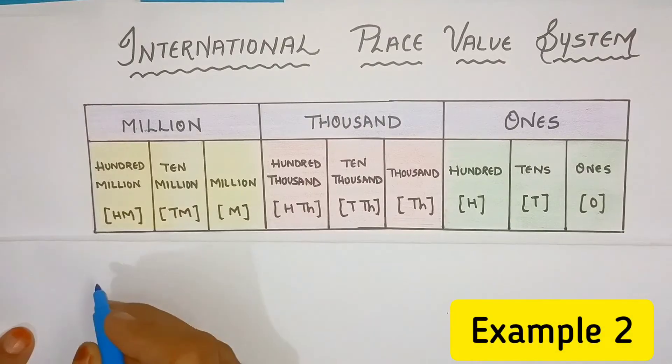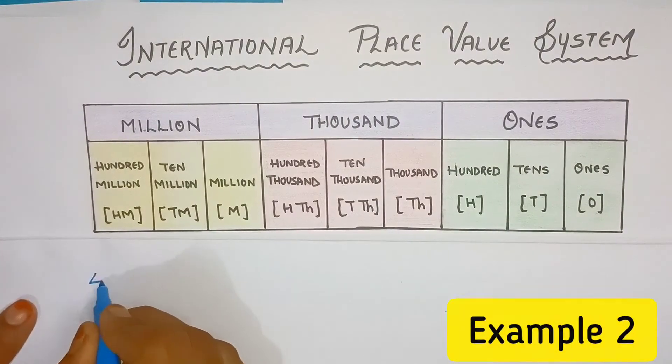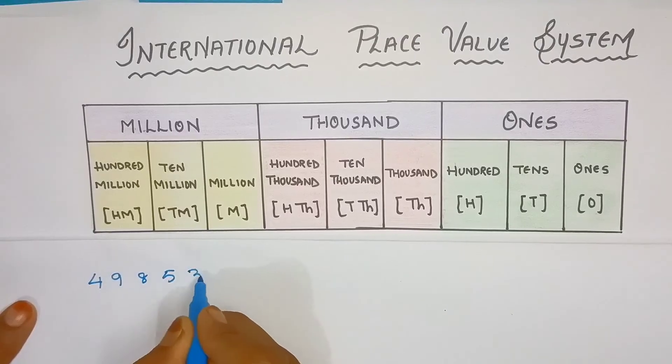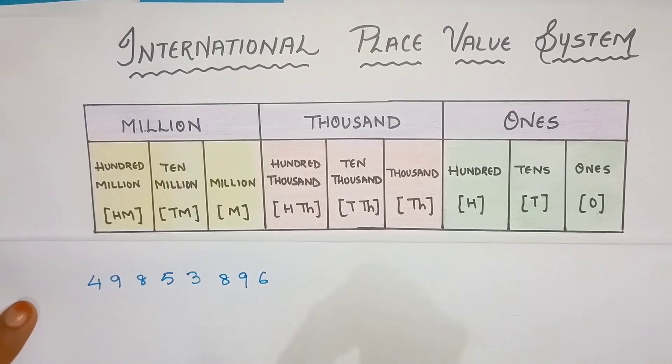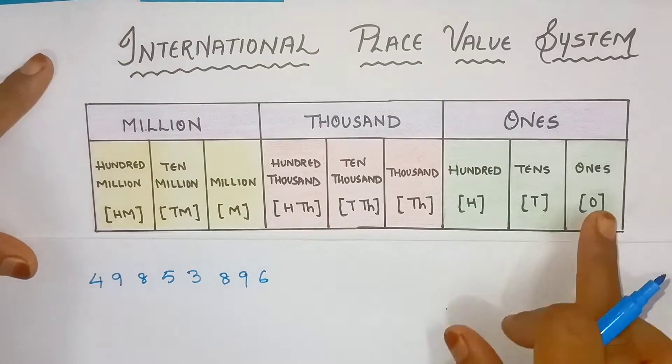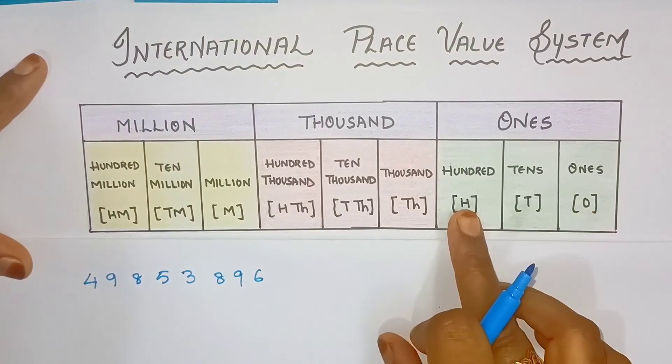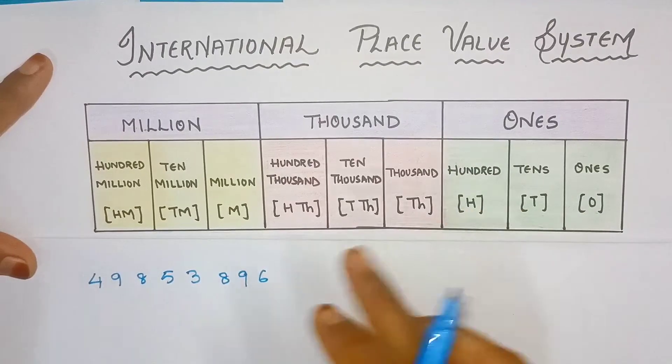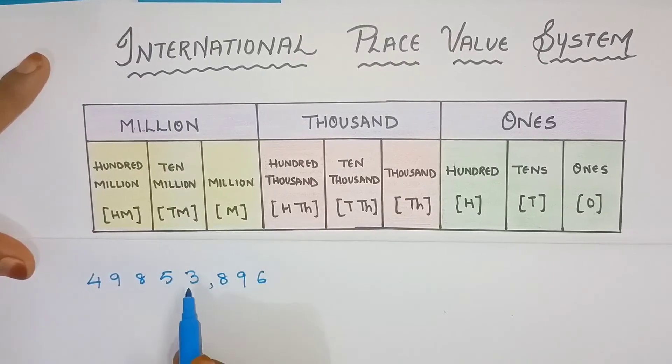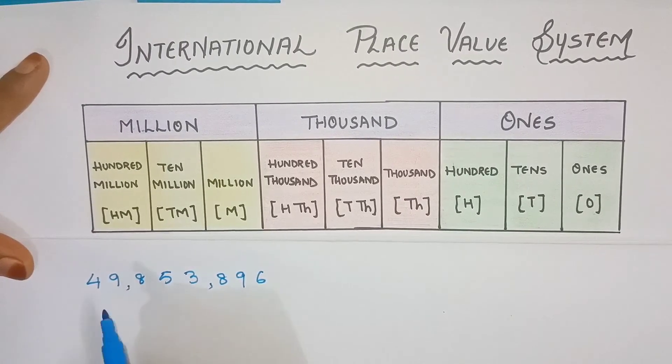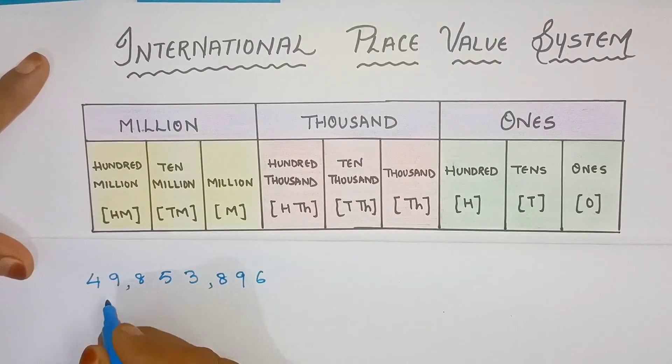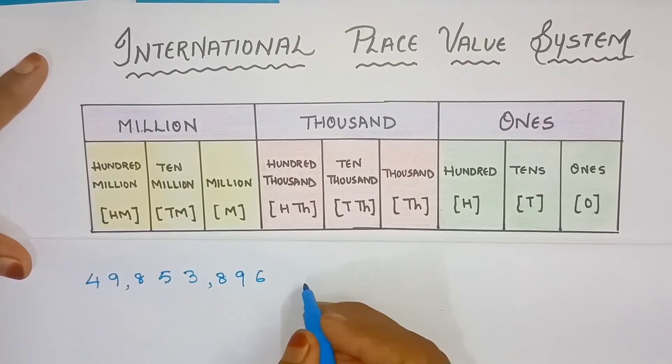Now, let's take another example with eight digit numbers: Four, nine, eight, five, three, eight, nine, six. Let's see here, where the comma is from. First, ones in place is three places: One, tens, hundreds. Before three places, one comma. Again, thousands in three places: Three, five, eight, comma. And millions in three places. But here, only two places.